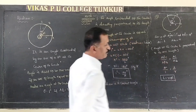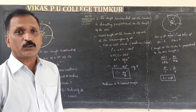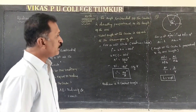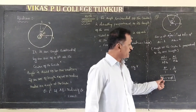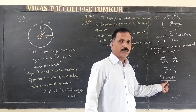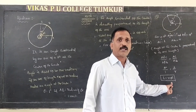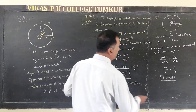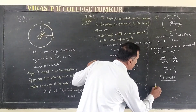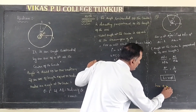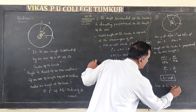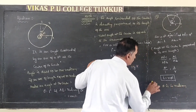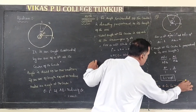Cross-multiplying, the arc length L equals R into theta. This is the relation between the length of the arc, the radius of the circle, and the angle — where theta is in radians. That is very important.